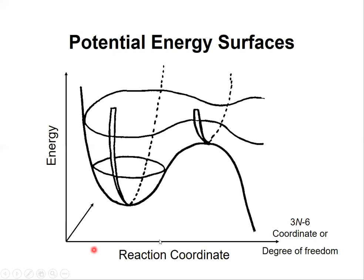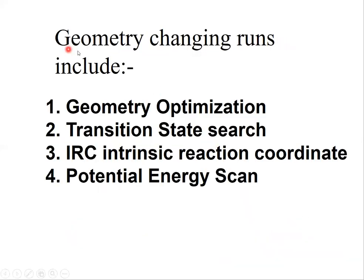If we have two reaction coordinates and energy on one axis, we can change these two coordinates and get different energies. The one with minimum energy is called optimized geometry, and the one with maximum energy is called the transition state. There are four types of calculations that change geometry: geometry optimization, transition state search, IRC (intrinsic reaction coordinate), and potential energy surface.